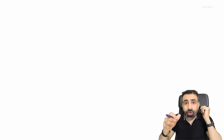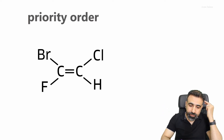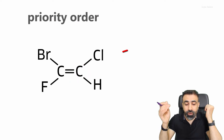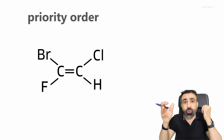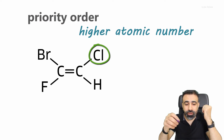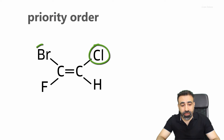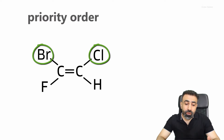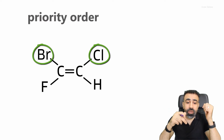Let me explain how we arrange groups according to their priorities. On the right end we have chlorine and hydrogen. To arrange them, we look at which atom has the higher atomic number. Chlorine has a higher atomic number, so it is the group with higher priority. On the left end we have bromine and fluorine. Bromine has the higher atomic number, so it has higher priority. Here chlorine and bromine are the two higher-priority groups and they are both on the same side of the double bond, so this isomer is called the Z-isomer.